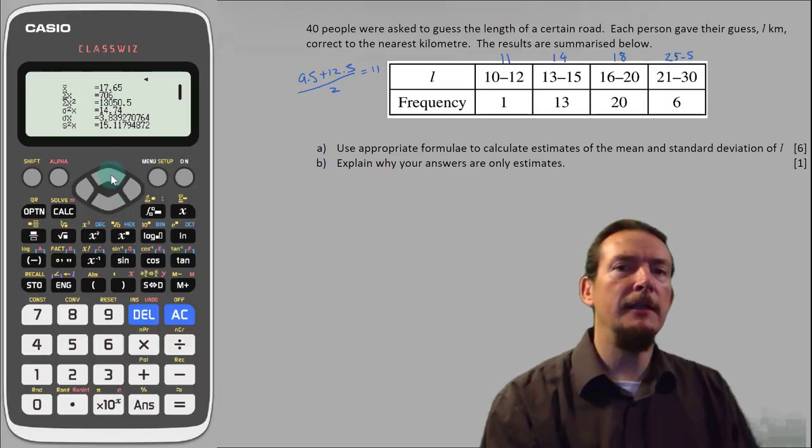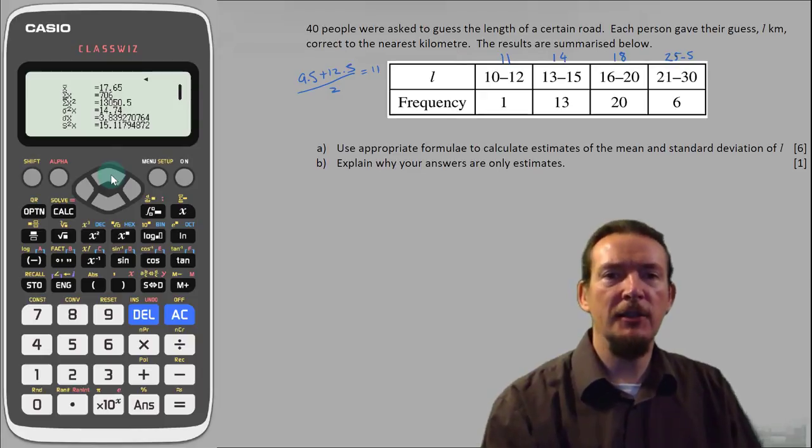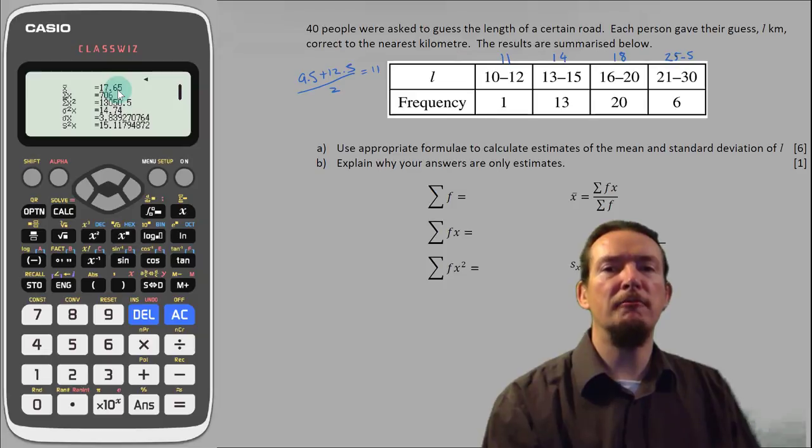Scrolling down we can see min, median, quartiles, and max values which will be very handy for other questions but for this particular one we need these values at the top of the list. X bar is the mean so that's the value I'm going to write down over here, 17.65.